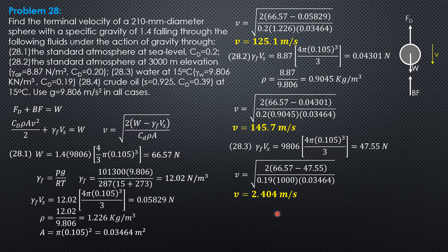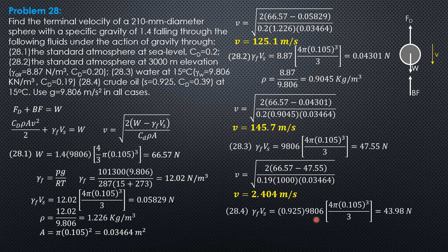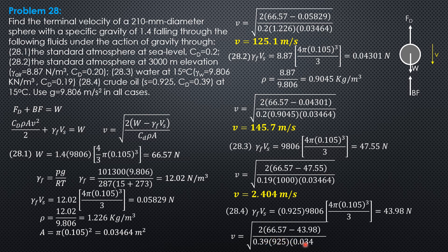For the fourth case — crude oil with specific gravity 0.925 and coefficient of drag 0.39 — gamma of fluid times volume of sphere equals 0.925 times 9,806 times volume of sphere = 43.98 N. The density of crude oil is 925 kg/m³. Substituting: V = √(2 × (66.57 − 43.98) / (0.39 × 925 × 0.03464)), giving a terminal velocity of 1.901 meters per second in crude oil. That's it for this problem.